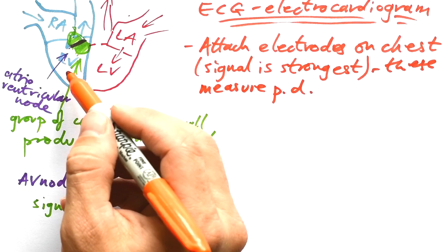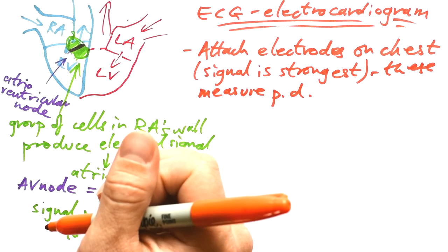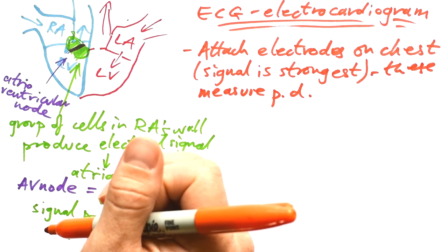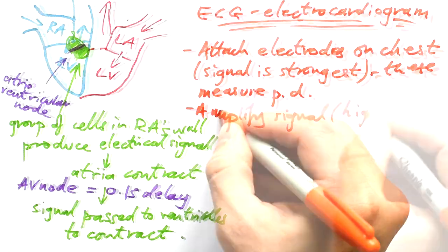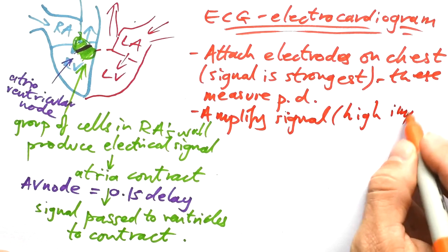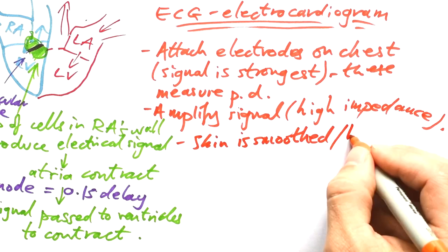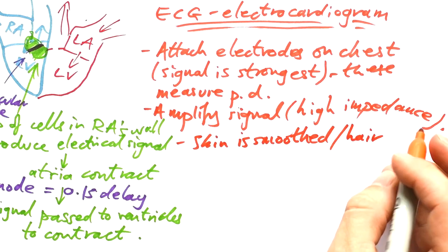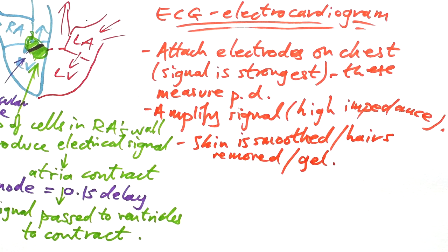Now the signal isn't massive to begin with, and because your body isn't amazingly conductive, that means by the time you get to your chest the signal is fairly weak. So we need to amplify the signal with a high impedance amplifier. The skin is smoothed and you can remove hairs to make it better so you have better contact. You can actually use a gel as well to make sure the signal is conducted as well as possible from your skin to the electrodes.